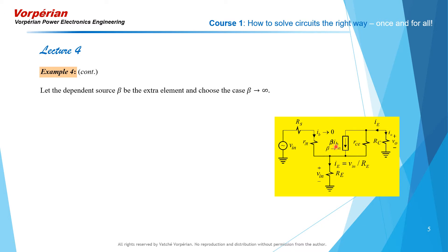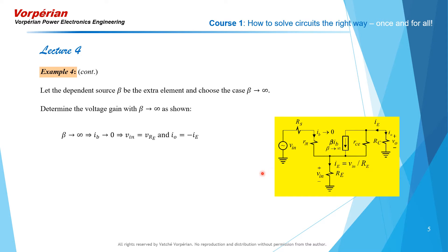When beta goes to infinity, beta·IB depends on IB, and therefore IB will shrink to zero. When that happens, the voltage drop across RS and Rπ will be zero, and Vin will appear directly across RE, starting a current IE = Vin / RE. This current flows entirely through that branch, and the output current multiplied by RC gives the output voltage. This is a straightforward calculation — very similar to ideal op-amp calculations.